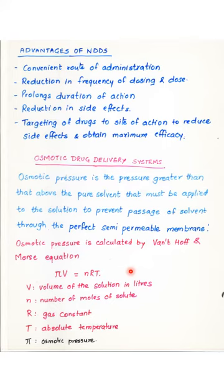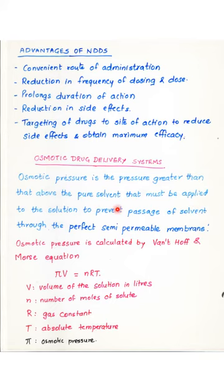Osmotic pressure can be calculated by the Van't Hoff and Morse equation: π·V = nRT, where π is the osmotic pressure, V is the volume of the solution in liters, n is the number of moles of the solute, R is the gas constant, and T is the absolute temperature. Thus osmotic pressure is the pressure greater than that of the pure solvent which must be applied to the solution to prevent passage of solvent from the side of lower concentration to the side of higher concentration through the semi-permeable membrane.